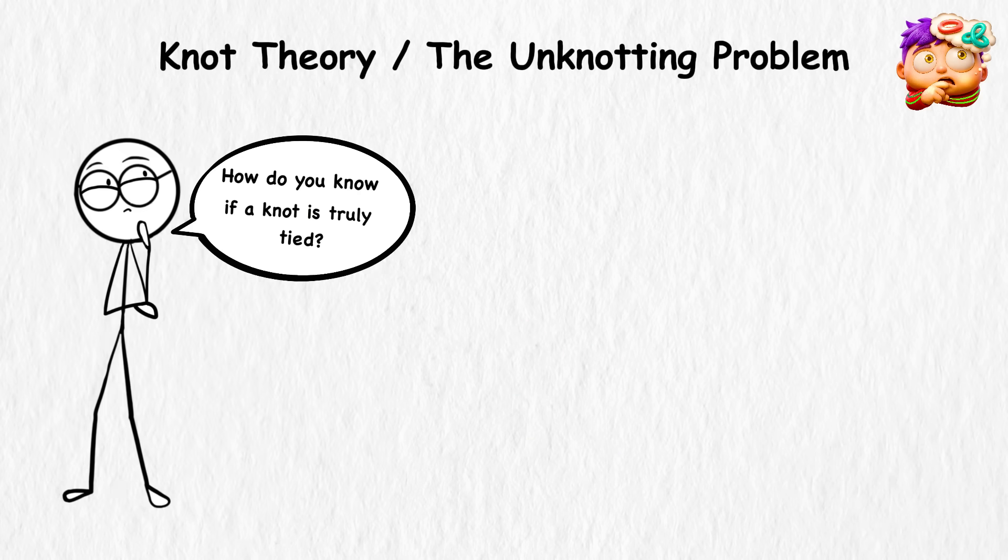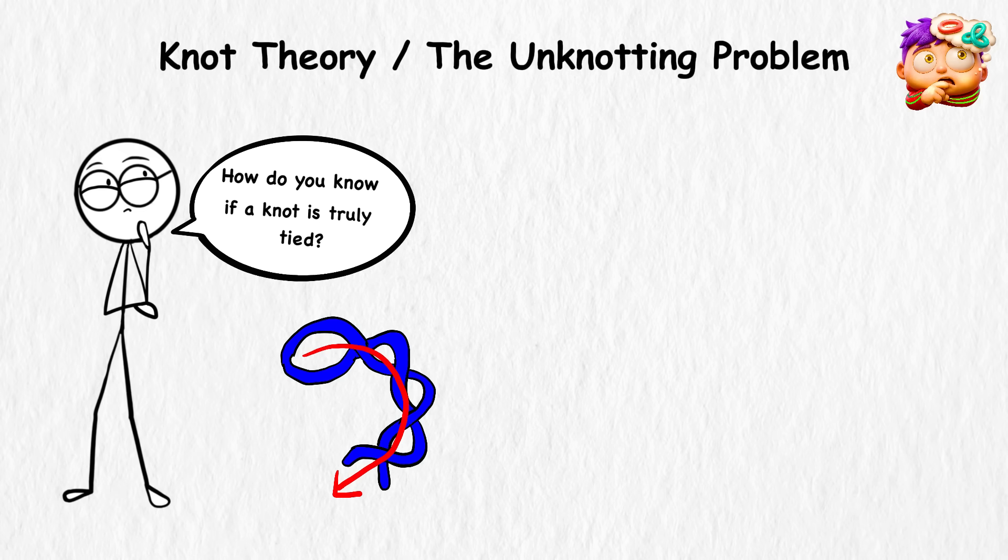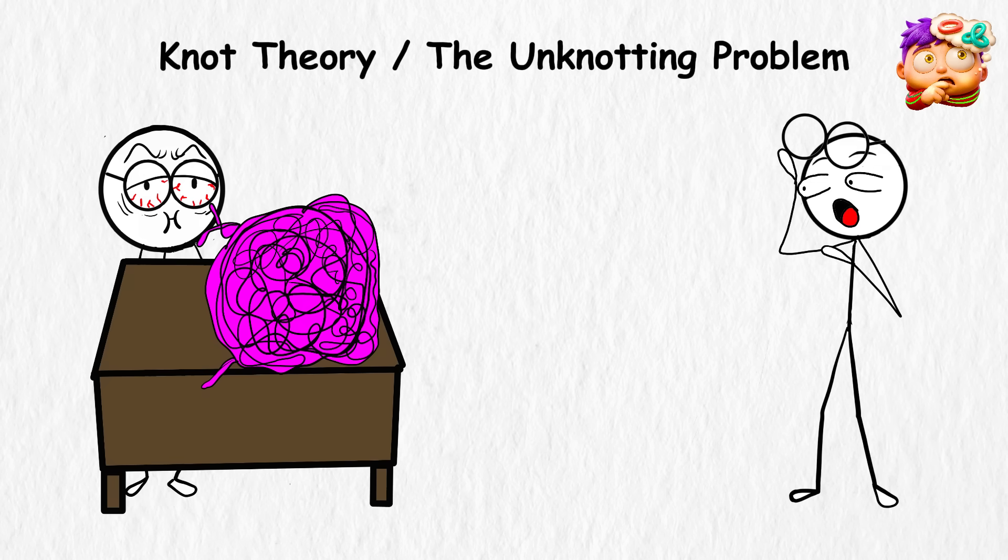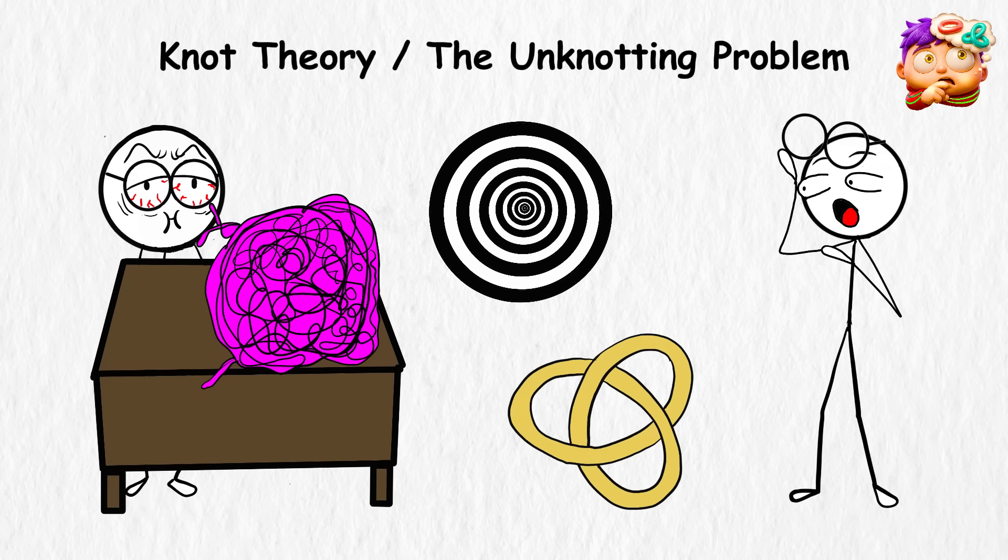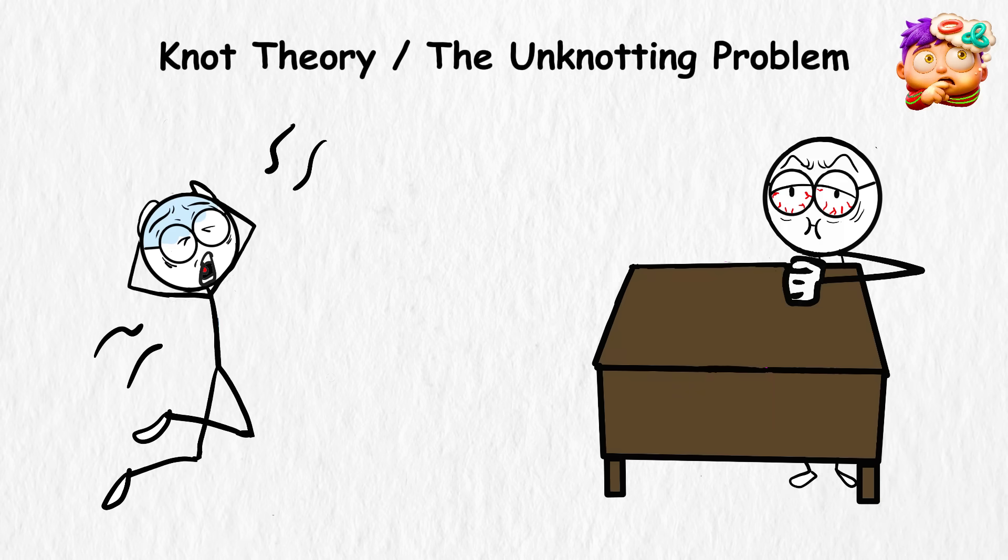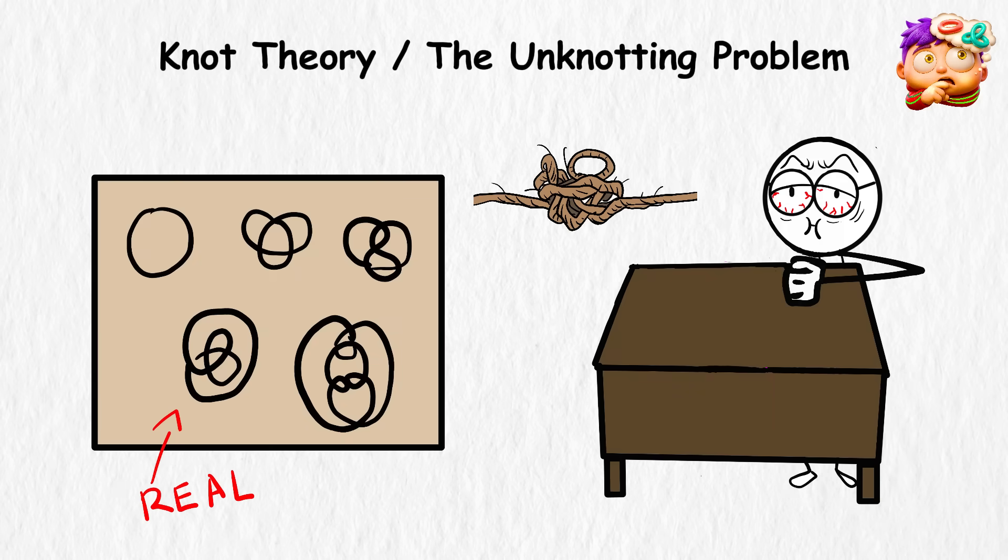Here's the puzzle. How do you know if a knot is truly tied or if it's just a twist that can actually be undone in one clean loop? This is what they call the unknotting problem. Imagine you're staring at a big tangle of yarn on your desk. It looks impossible, but sometimes that knot is only an illusion. If you pulled it the right way, it could slip apart into nothing. The hard part is proving which ones are real knots and which ones only look bad.